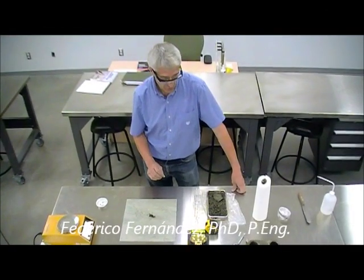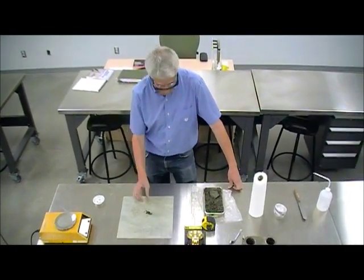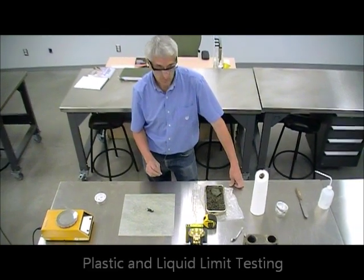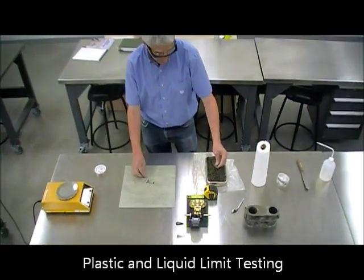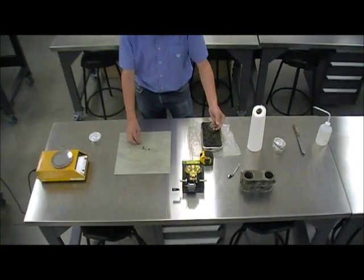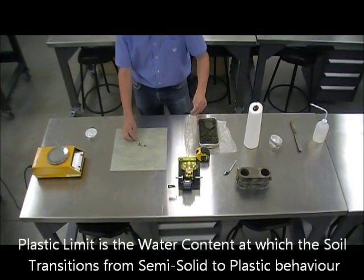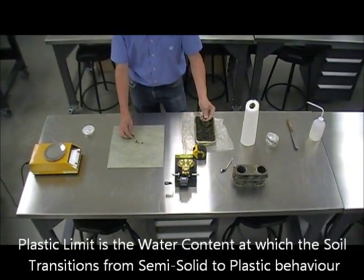There are two tests that we do to determine the plastic and the liquid limit. We will start with the plastic limit. The plastic limit is the state of moisture in a soil that separates plastic behavior from solid behavior.